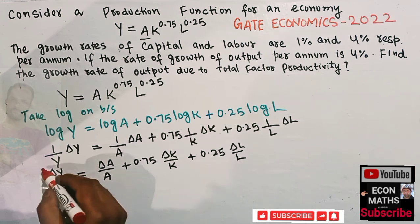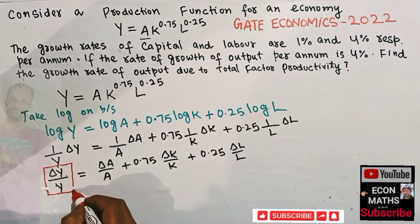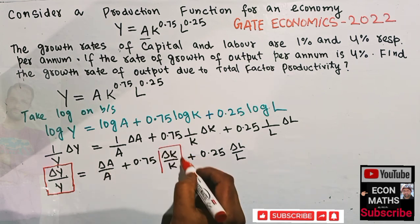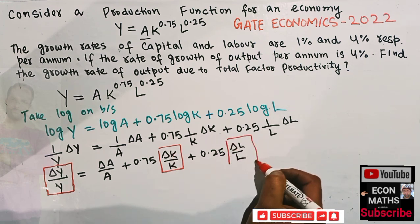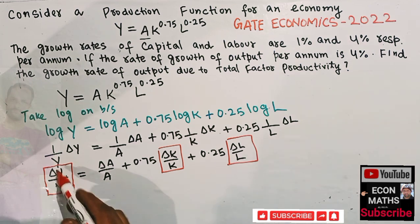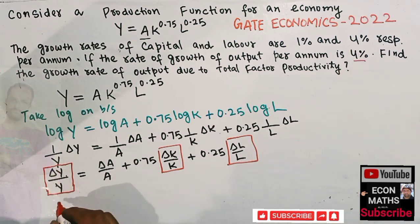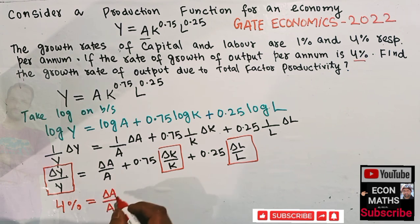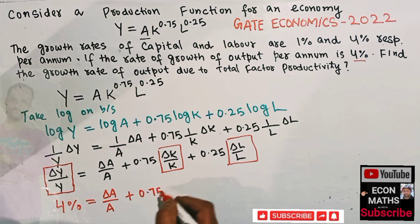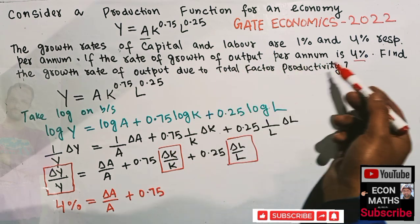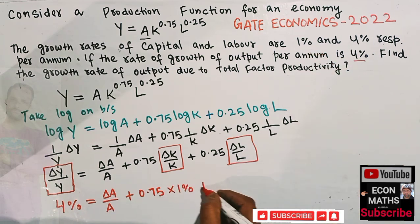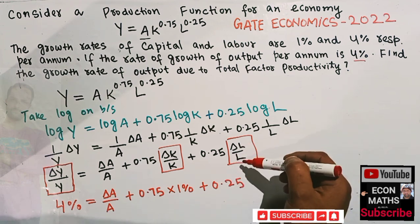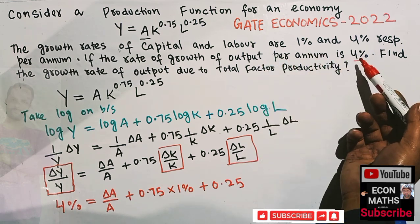Here, dy/y is simply the growth rate of output, dK/K is the growth rate of capital, and dL/L is the growth rate of labor. We are given that the growth rate of output is four percent, so we write: 4% = dA/A + 0.75 × (dK/K) + 0.25 × (dL/L). We need to find dA/A, the growth rate of total factor productivity. The growth rate of capital is given as one percent, so we substitute one percent for dK/K.